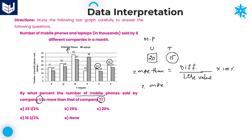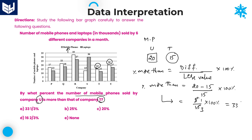So: 20 minus 15 divided by 15 into 100 percent. The difference is 5. So 5 by 15 into 100 — we can cancel: 1 by 3 into 100, which is 33 and 1/3 percent. That means the number of mobile phones sold in company U was 33 and 1/3 percent more than the number of mobile phones sold in company T. Option A is the right answer for this question.